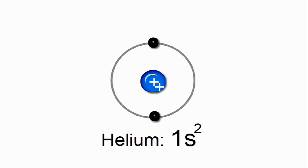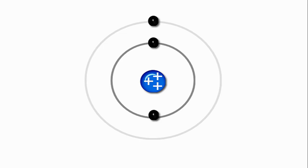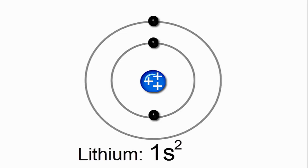At this point, we've filled the 1s orbital. For lithium, the next element on the periodic table, we add another electron and put it in a new orbital, the 2s orbital. For lithium, we have the 1s orbital, which is full, and then we have the new 2s orbital with one electron. So that's the electron configuration for lithium.